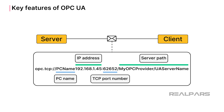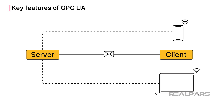The OPC UA TCP protocol uses essentially the same link structure as for an Internet link. This gives OPC UA clients the ability to directly discover, address, and subscribe to data in the OPC UA server over any Ethernet network.